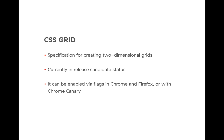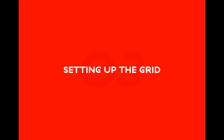CSS Grid is a specification for creating two-dimensional grids in CSS. It's currently in release candidate status, which means it's being implemented in most browsers and probably won't change majorly — some minor differences may occur. Currently it can be enabled via flags in Chrome and Firefox, or if you're using a bleeding-edge browser such as Chrome Canary, you can find it there and play around with it. So let's dive into some code.